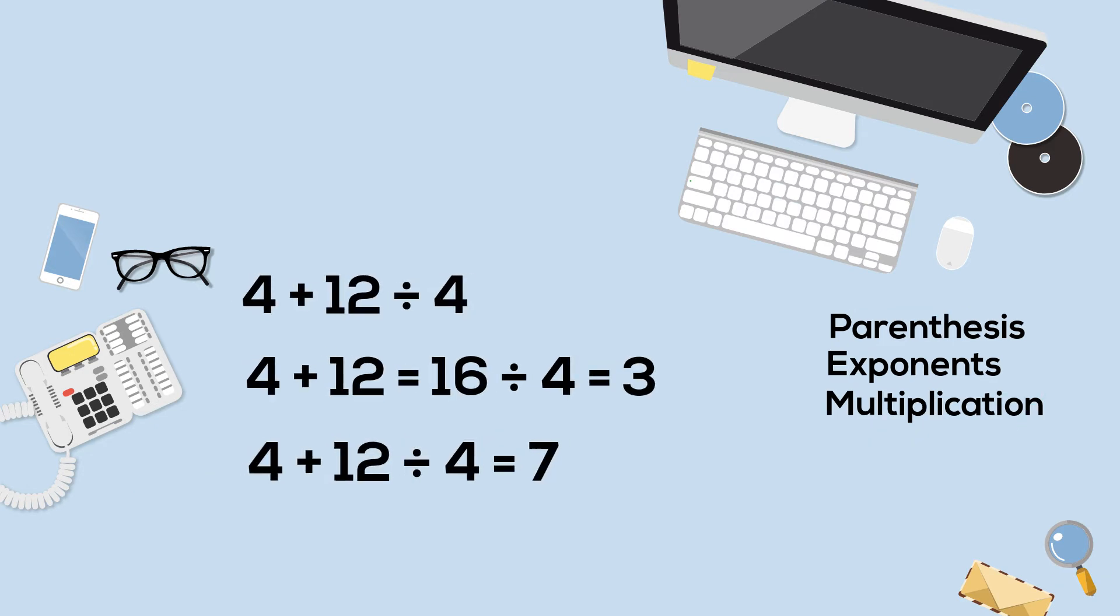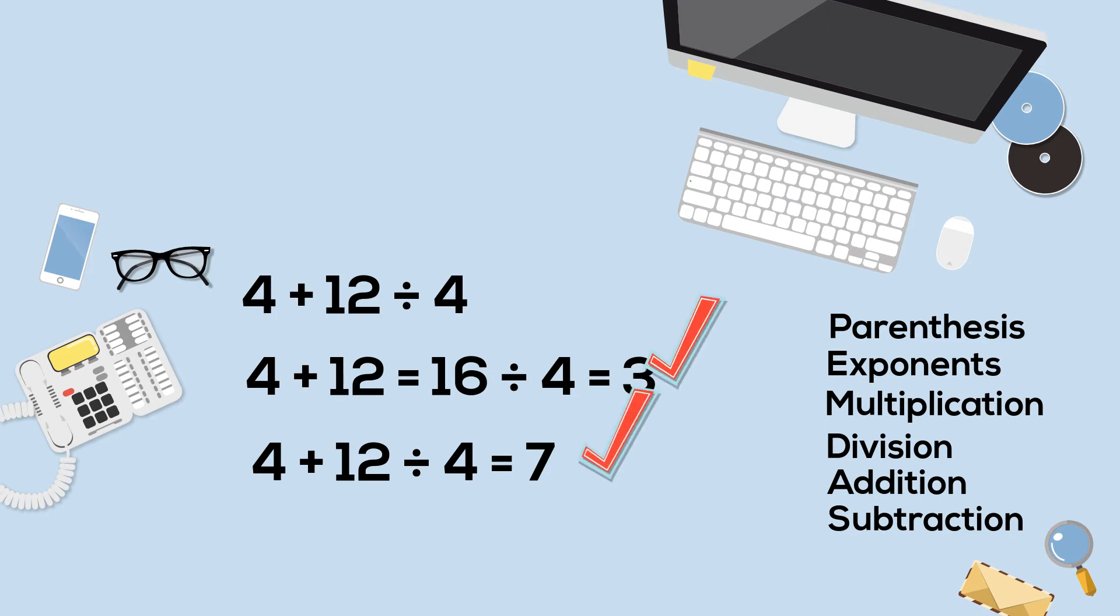Let's look at 4 plus 12 divided by 4. Is the correct answer 3 or 7? Going left to right, 4 plus 12 is 16, 16 divided by 4 equals 3.